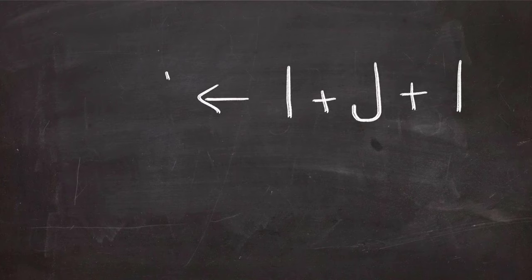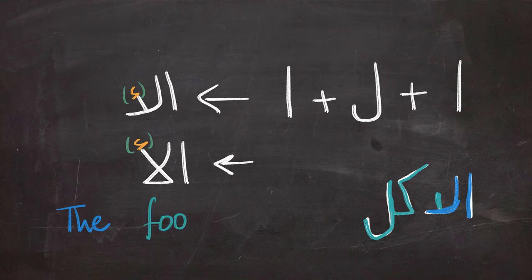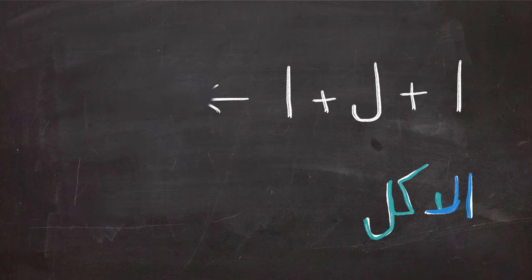If we added al—alif lam—and then alif, then we will have al-ah, and that is a combination that is also very common. This happens when you want to add the article to a word that starts with alif already. Sometimes you see Hamza put on top of the second alif in the combination, but it doesn't happen always, like in this example al-akl, which means the food.